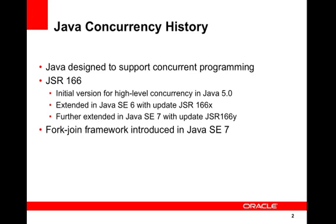To give you a bit of background on the Java concurrency history: Java was actually designed from the very ground up to support concurrent programming, with basic concurrency support in the Java programming language and its class libraries. Since version 5.0, Doug Lea did some work and the Java platform included very high-level concurrency APIs that came in with JSR 166.